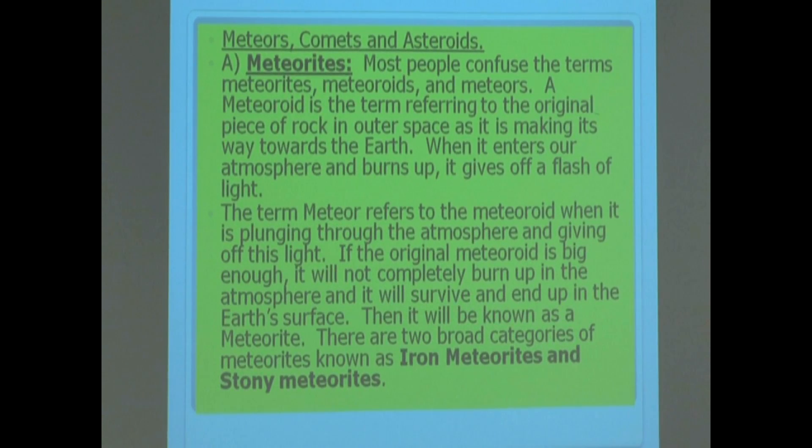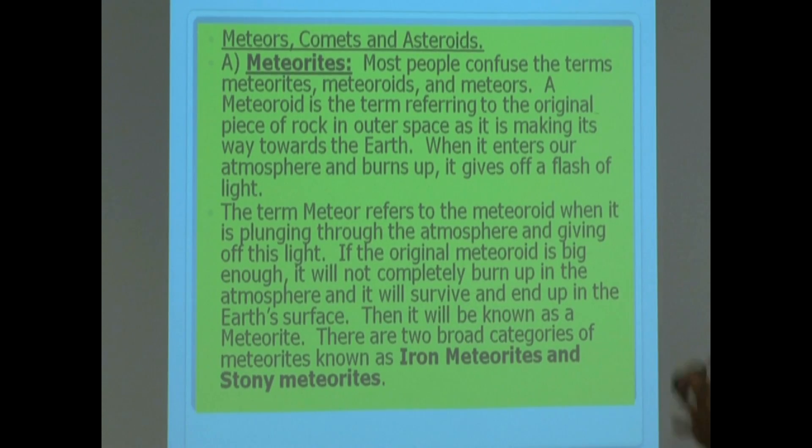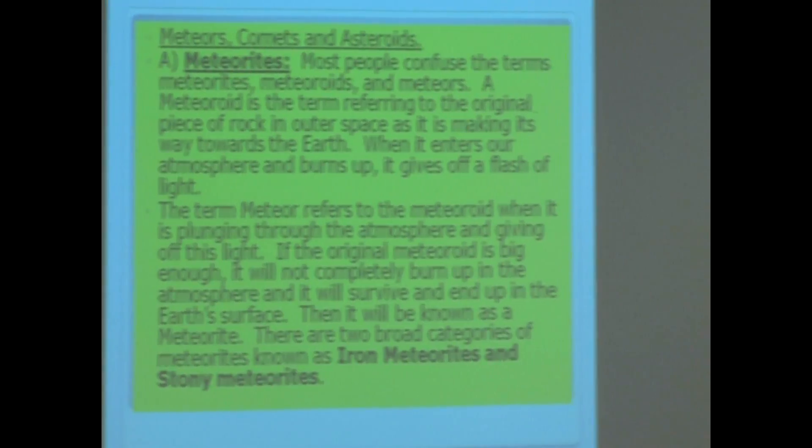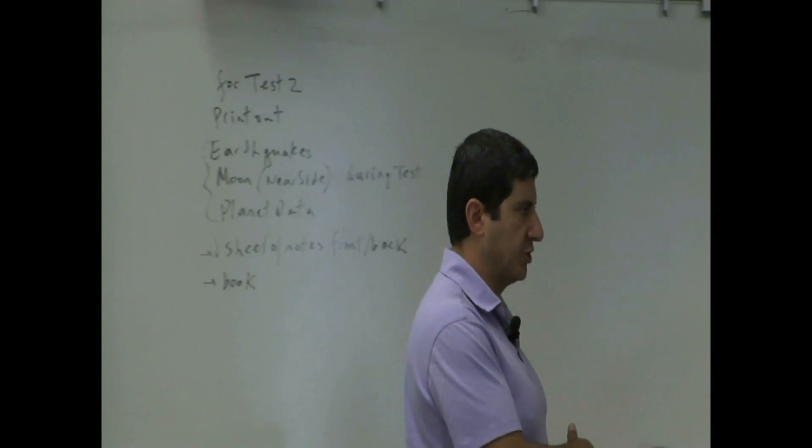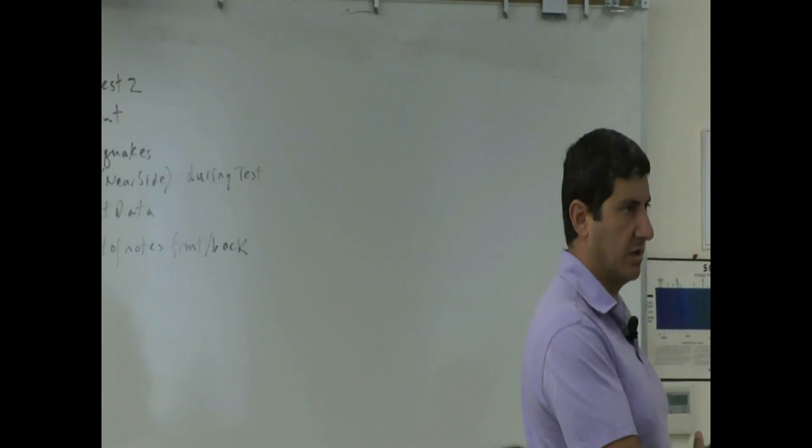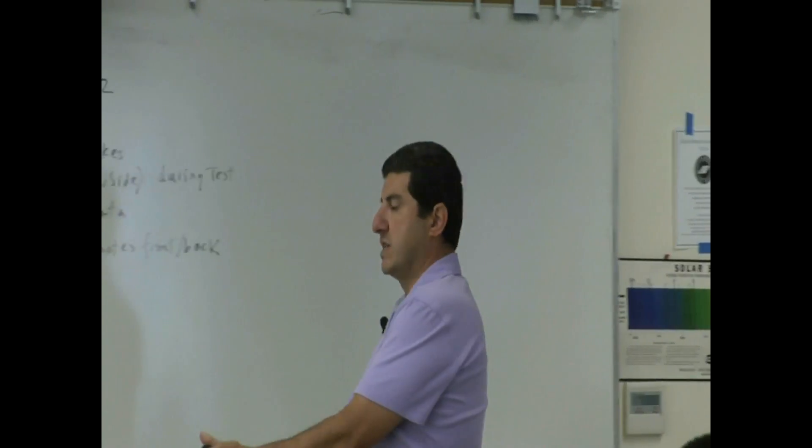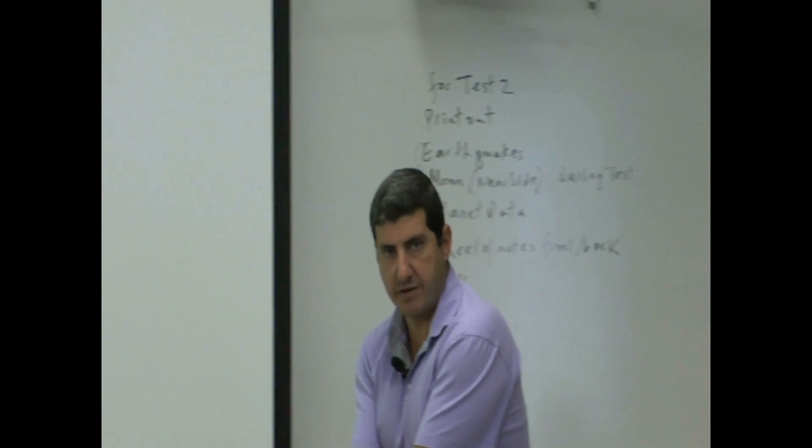If the original meteoroid is big enough, it will not completely burn up in the atmosphere. It's going to survive the plunge through the earth, and we're going to find some of it on the surface of the earth.